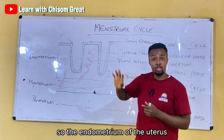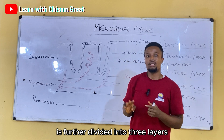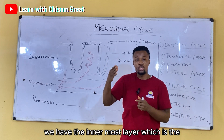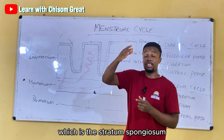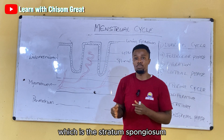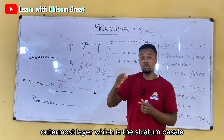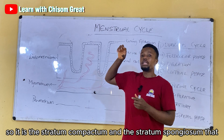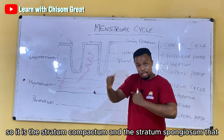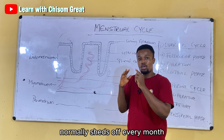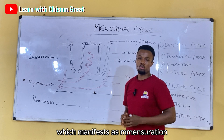The endometrium of the uterus is further divided into three layers: the innermost layer, which is the stratum compactum; the middle layer, which is the stratum spongiosum; and the outermost layer, which is the stratum basale. It is the stratum compactum and the stratum spongiosum which are shed and manifest as menstruation.